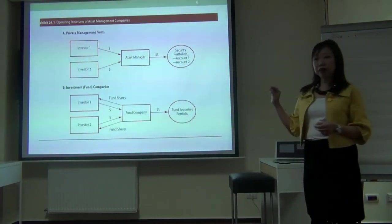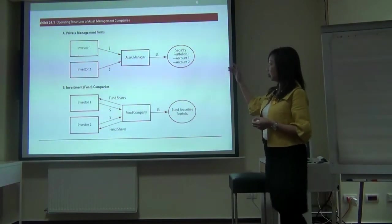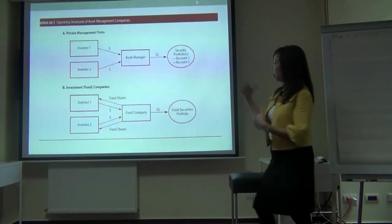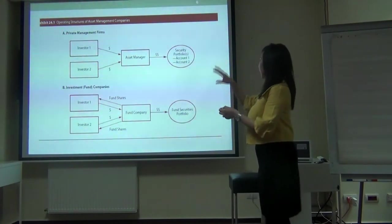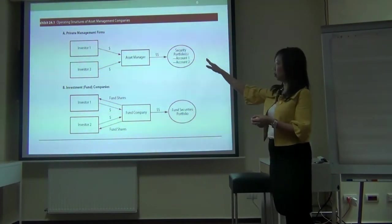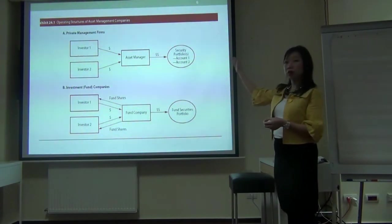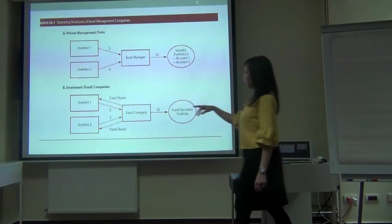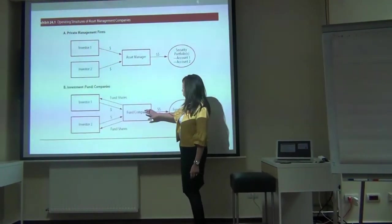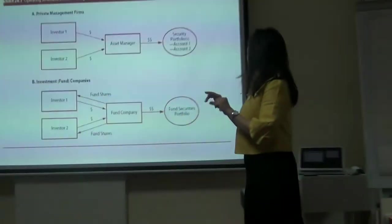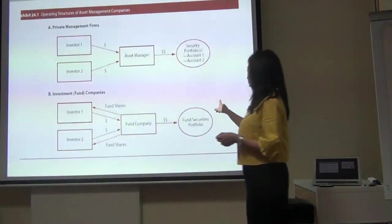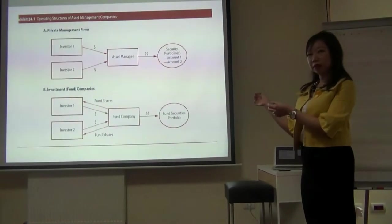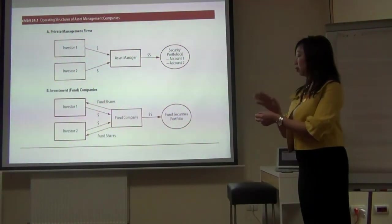How is a fund company different from other companies? With a private asset management firm, you put your money with an asset manager who invests in various portfolios — those are your individual accounts. If you buy a fund like a BlackRock fund, you own shares in the fund, and the fund company buys a portfolio of securities. You don't own the investments directly; you own them via an intermediary — the fund company.